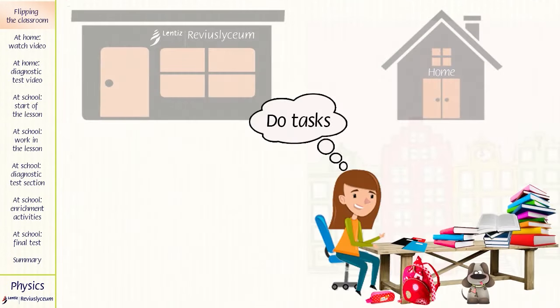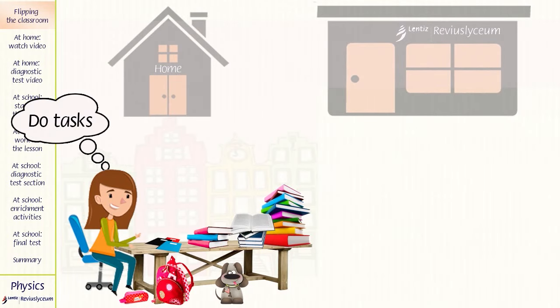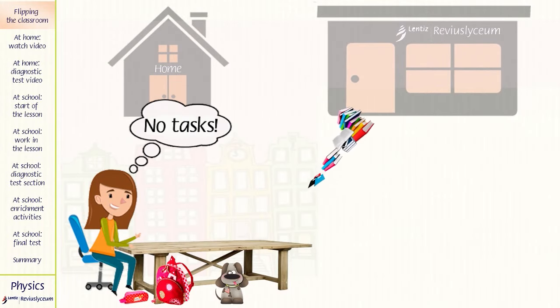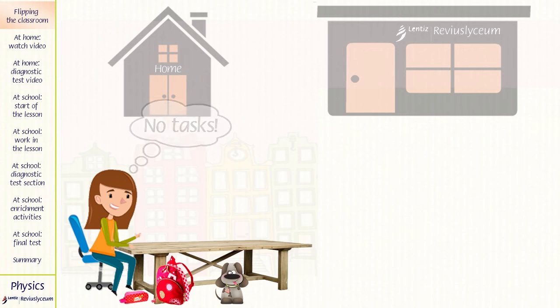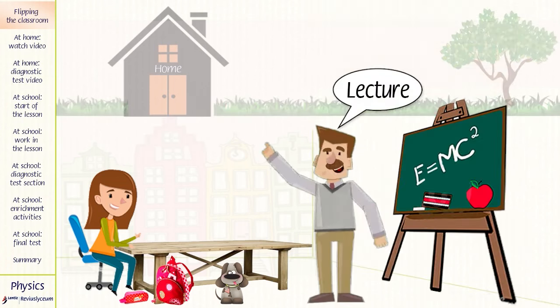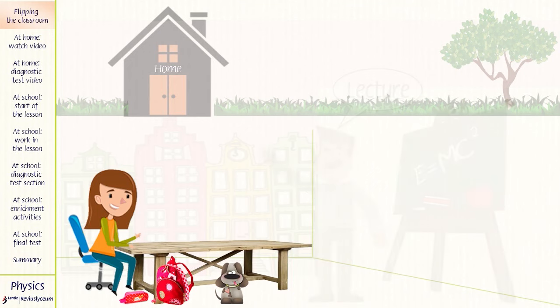Flipping the classroom means that you flip school and home. At home, pupils neither do homework nor work on their tasks anymore. But it goes without saying that the teacher cannot explain the content of the course book to each pupil individually. So how do the pupils get access to the teacher's lecture?